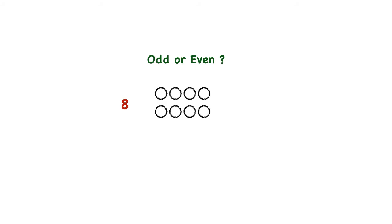Okay, let's see. If we try to make pairs with each of these circles, every circle is part of a pair. And we can make two equal groups of four. So this means that the number eight is even.